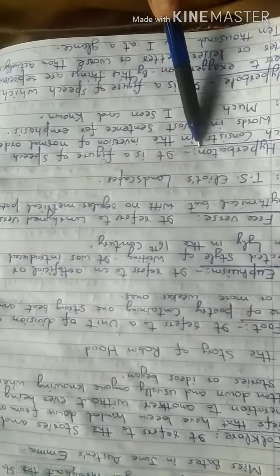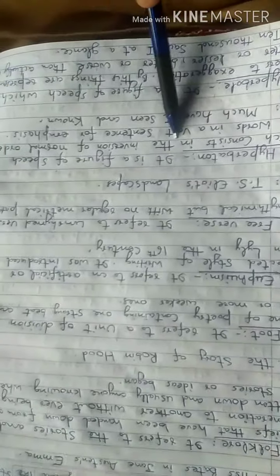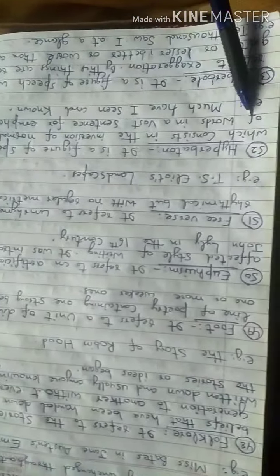Next term is hyperbaton. Hyperbaton is a figure of speech which consists in the inversion of normal order of words.